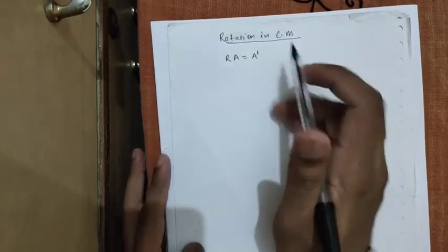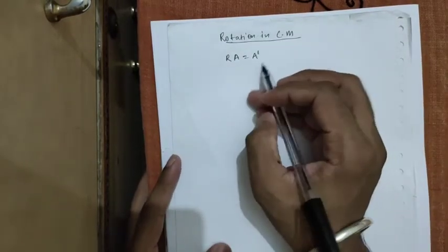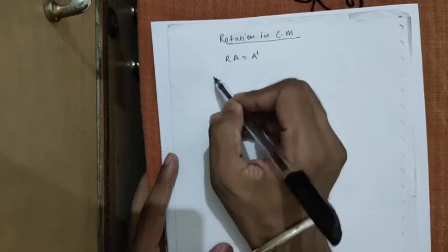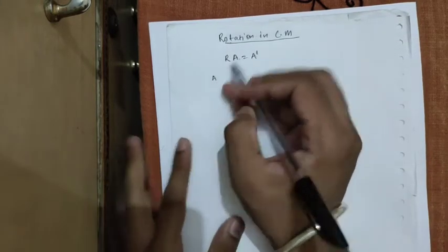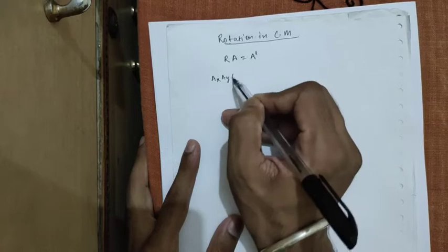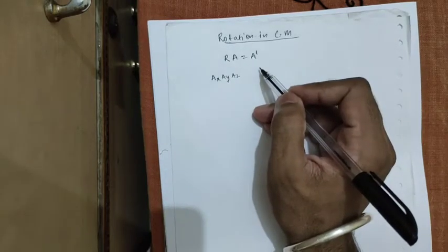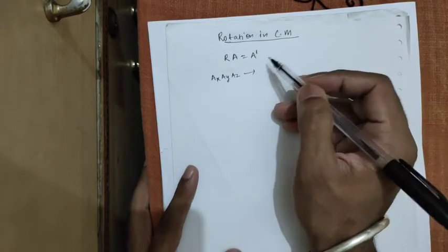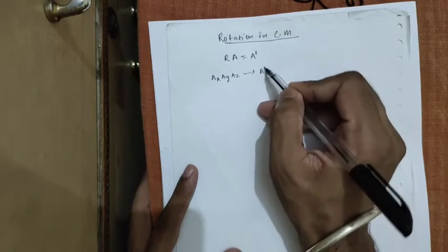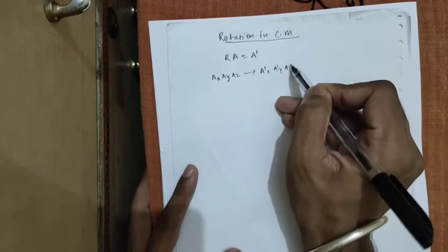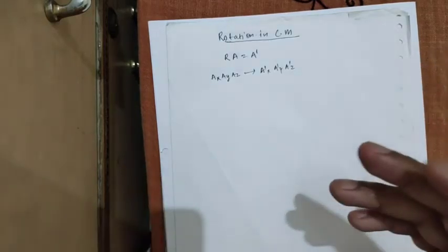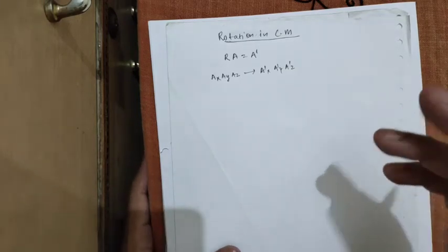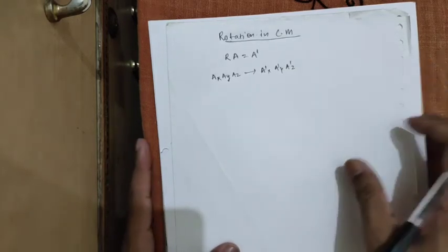As an example, say Ax, Ay, Az are the components of a vector A. After transformation by the rotation matrix, it transforms into A-dash-x, A-dash-y, and A-dash-z. This rotation matrix rotates over an angle phi about the z-axis.